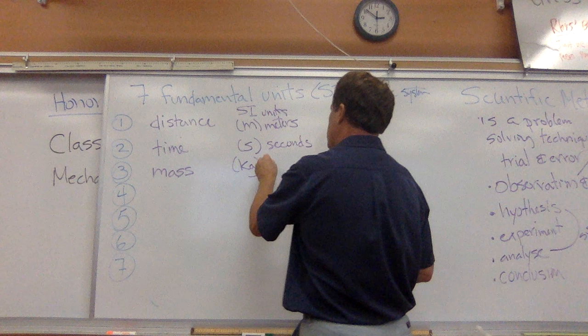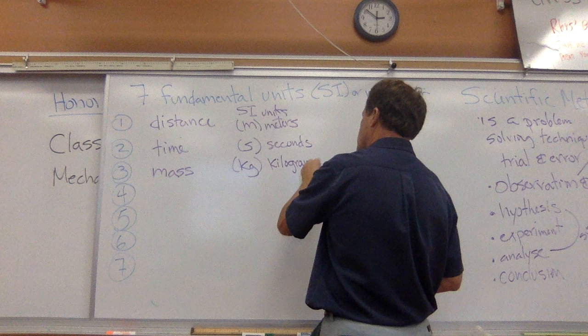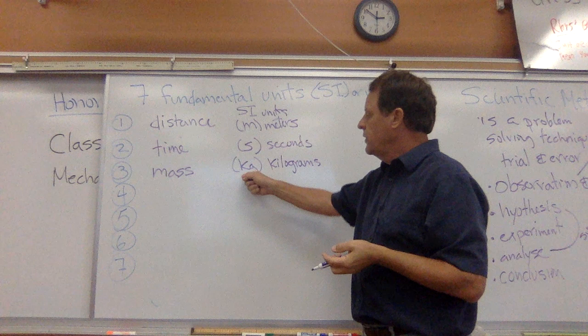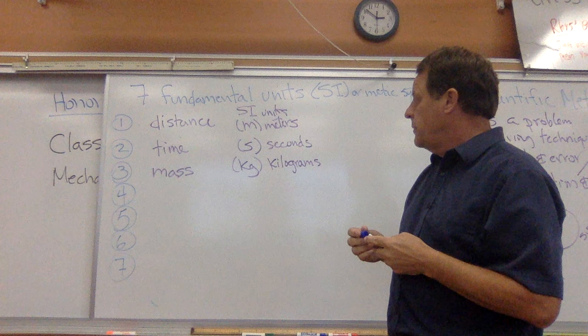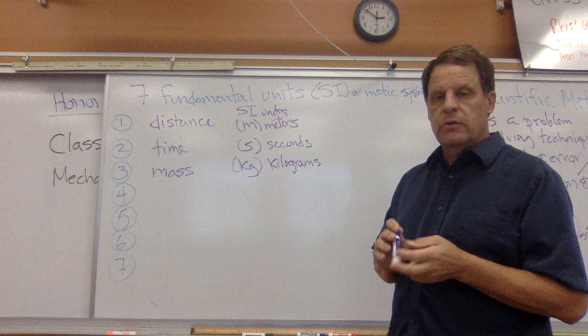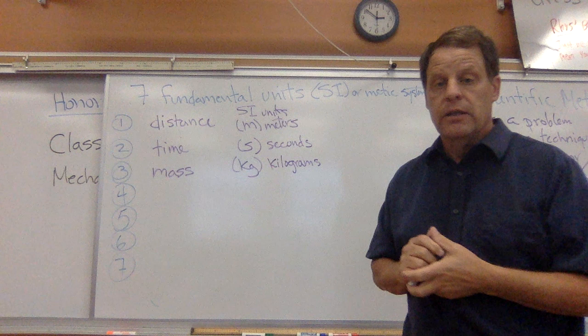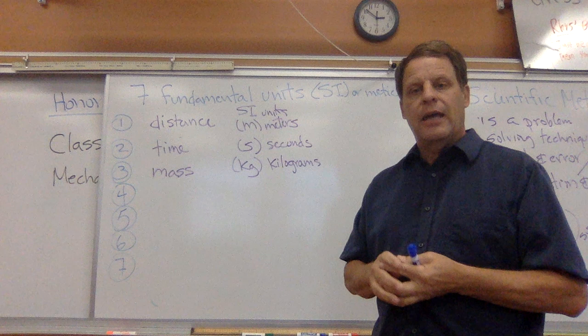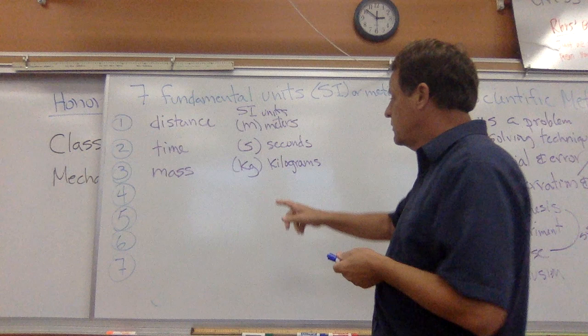The kilogram is interesting because it has that prefix of kilo. A gram is a very small amount, which is more commonly used in chemistry. In physics, bigger objects like a car, or you and me, are going to be more easily measured in kilograms. A kilogram is about 2.2 pounds — a little more substantial amount. That's why, when they voted, it was the kilogram that was chosen over the gram.